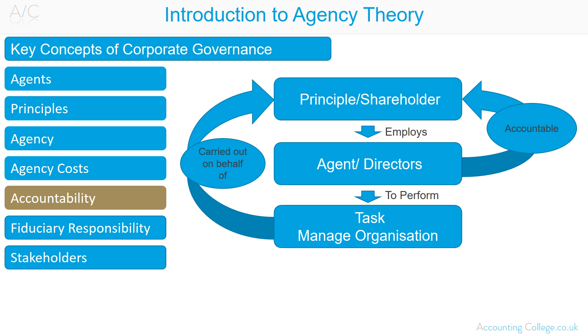Accountability. The agent, by accepting to undertake a task on behalf of the principal, becomes accountable to the principal for their actions with regards to the tasks they were employed to do.